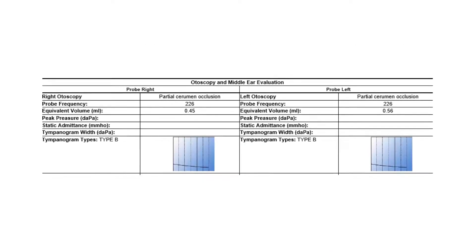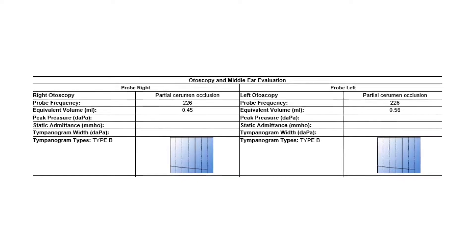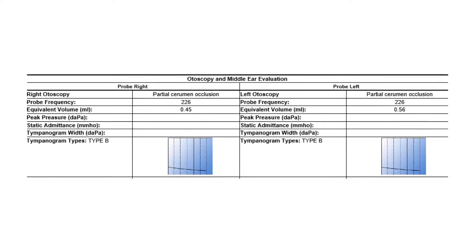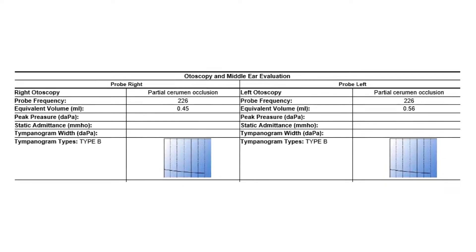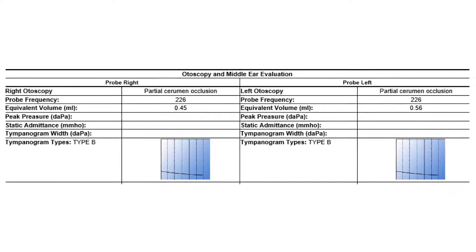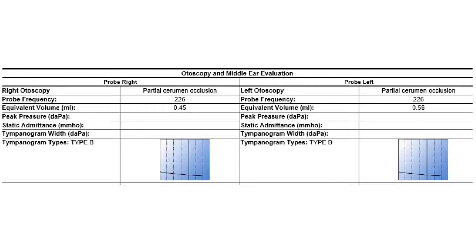Here we see an example of tympanometry with a flat or type B tracing. This suggests that there is middle ear pathology, which frequently includes fluid behind the eardrum, whether infected or not, or negative pressure in the middle ear. Flat type B tympanograms may also be seen in patients with an eardrum perforation, but these patients will have a middle ear volume — labeled here as equivalent volume — that is increased, often greater than one milliliter. Here we see volumes of 0.45 and 0.56 milliliters, suggesting that the eardrum is intact.